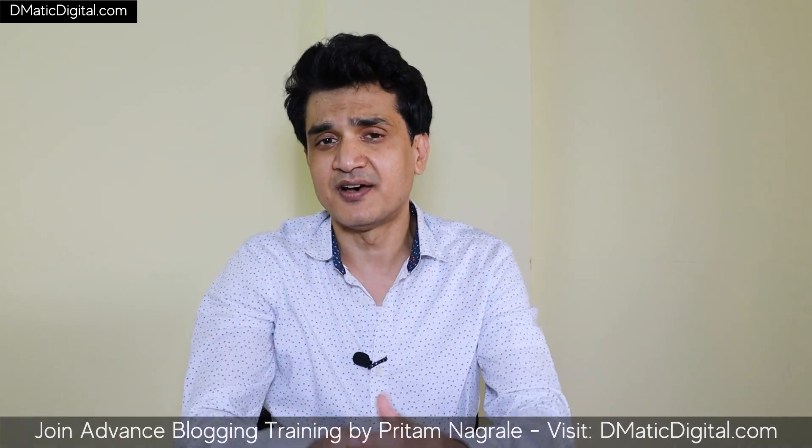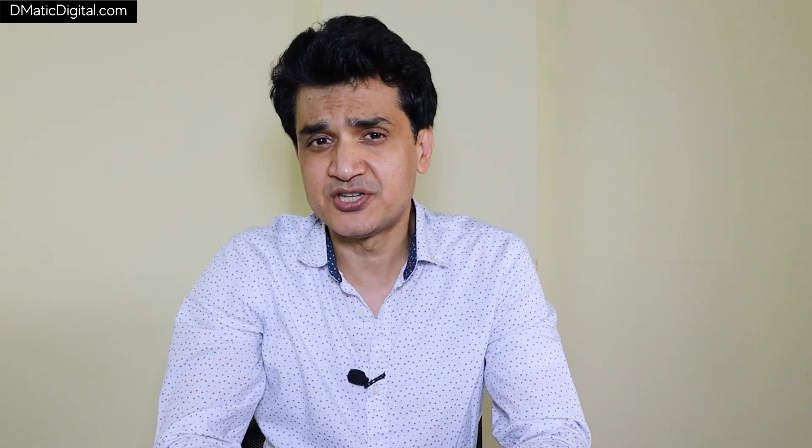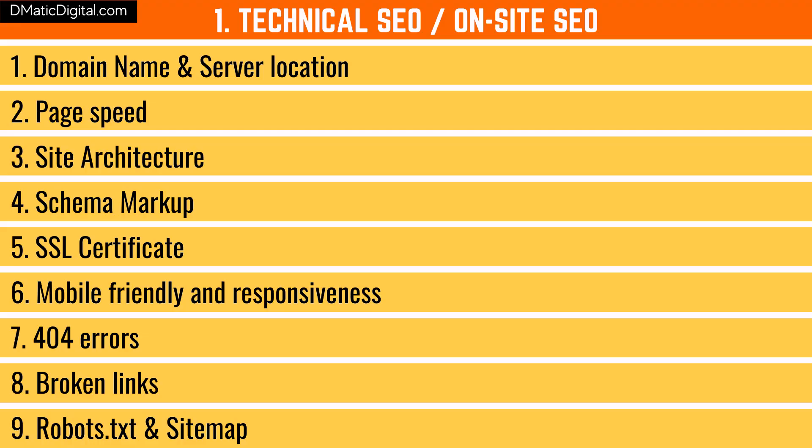You can find themes like GeneratePress that are not only mobile friendly but very fast. Seventh is 404 errors — if you delete pages on your website and people visit them, they'll find 404 errors. You need to find all such pages and fix them. Eighth is broken links — as you keep adding posts with outbound links, if those linked websites delete pages or shut down, your visitors will encounter broken links. Google does not like this, so find and fix all broken links.